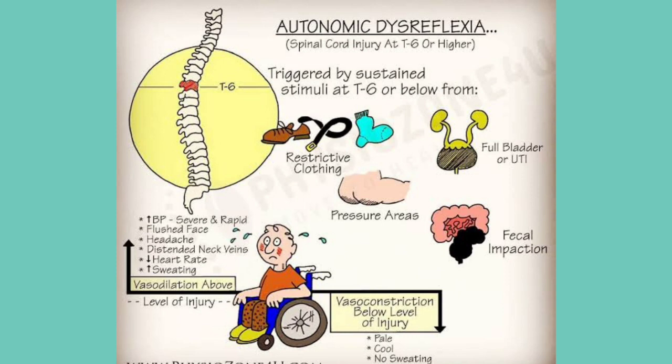The hypertension is sensed by baroreceptors and carried to the brain, which then orders vasodilation and decreased heart rate. So above T6 there is dilation of blood vessels and decreased heart rate, whereas below T6 there is continued vasoconstriction and sympathetic activation. This is the pathology of autonomic dysreflexia — understanding it helps you reach the correct answer easily.